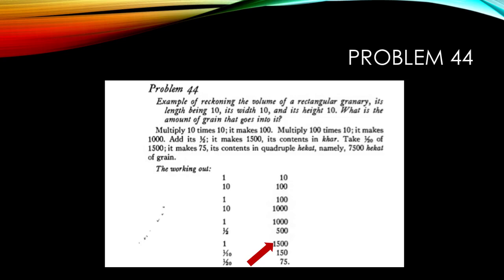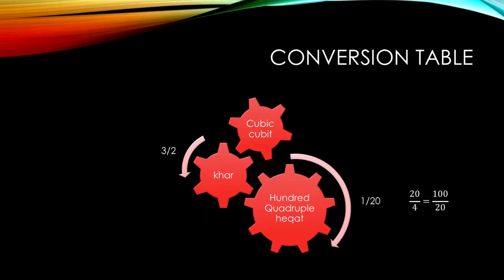Then we need to go from Khar to a hundred quadruple Hekat. And like we did in lesson 41, we divide by 20.